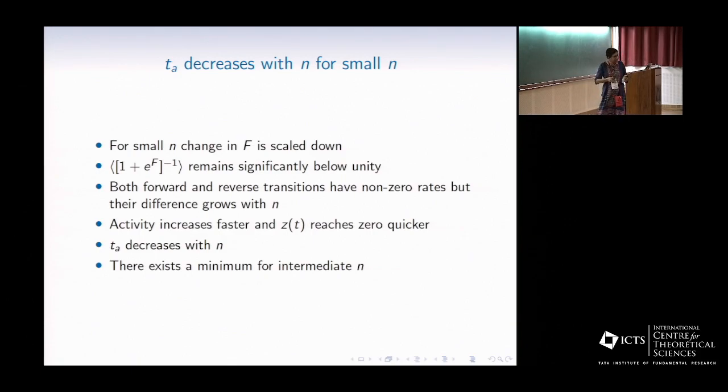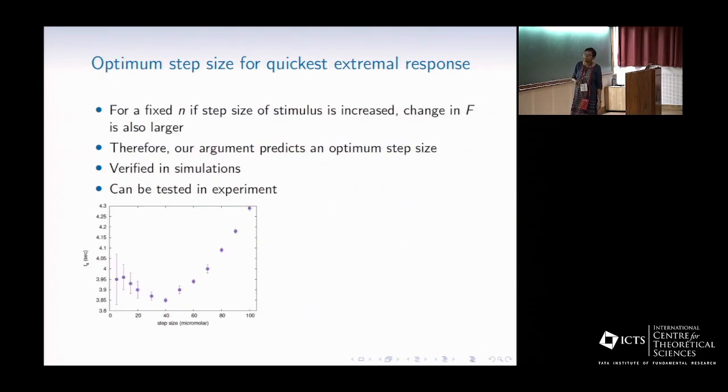So t* decreases with n for small n, increases with n for large n. So there must be some minimum at some intermediate value. This entire argument can be repeated if I just hold the receptor cluster size fixed and play with the step size of the stimulus. For large size of the step stimulus, similarly, one kind of transition remains blocked, and t* increases with step size.